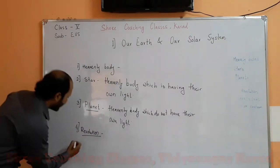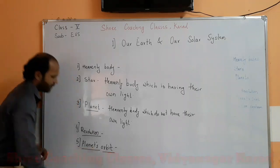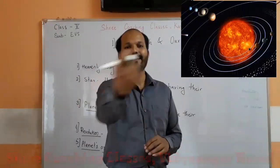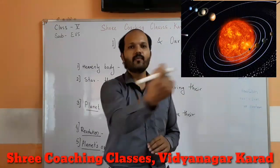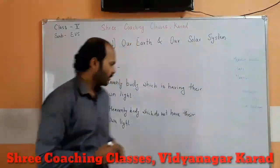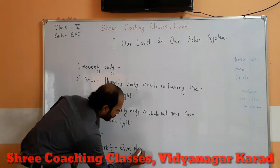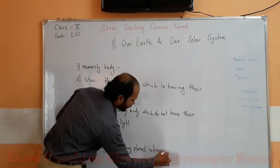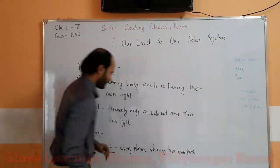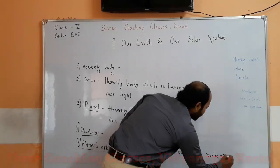Our next point is planet's orbit. Every planet is having its own path to revolve around the sun. That path is known as the planet's orbit. So how we can write the definition: planet's orbit — every planet is having its own path to revolve around the sun, and that path is known as the planet's orbit.